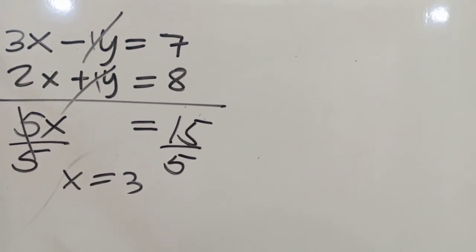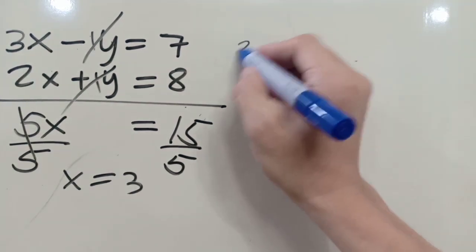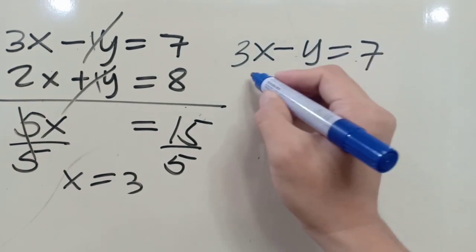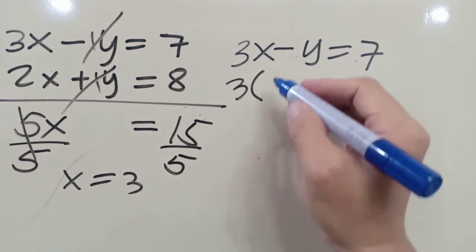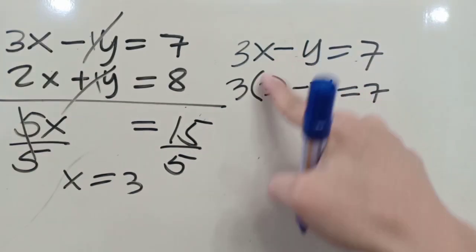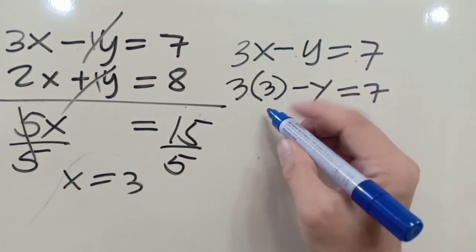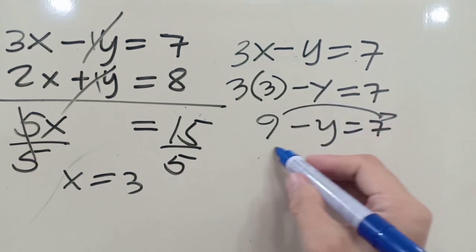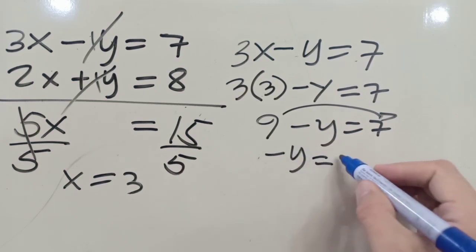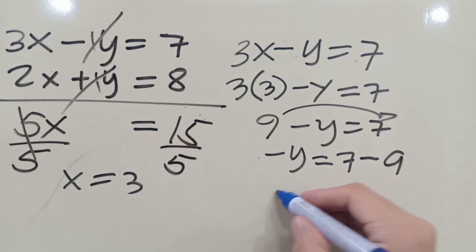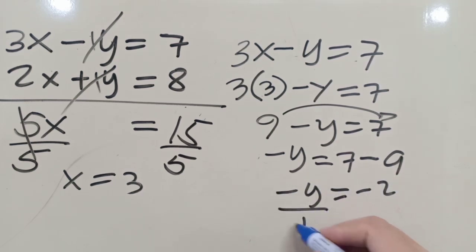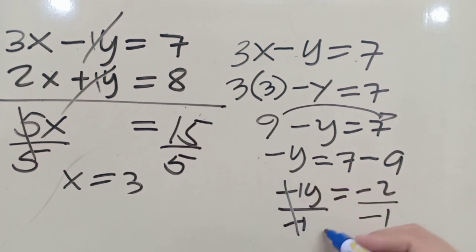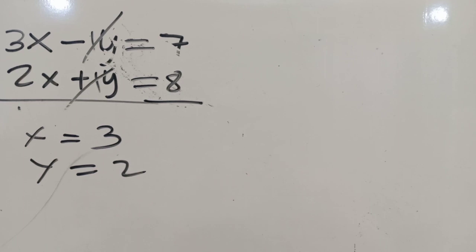Since x is equal to 3, we can use either of the two equations. Using the first equation: 3x minus y is equal to 7. Substituting x equals 3, we get 3 times 3 minus y equals 7, so 9 minus y equals 7. Transposing, negative y equals 7 minus 9, which is negative 2. Dividing by negative 1, y is equal to positive 2.